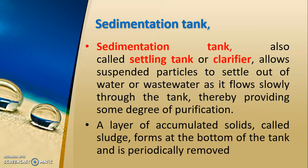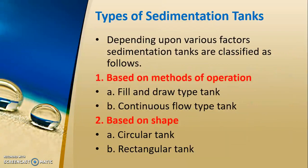After aeration, water goes to the sedimentation tank. The sedimentation tank has different names — it is also called a settling tank or a clarifier. Sedimentation tanks allow suspended particles to settle out of the water as it flows through the tank, providing some degree of purification. A layer of accumulated solids called sludge forms at the bottom of the tank and is periodically removed.